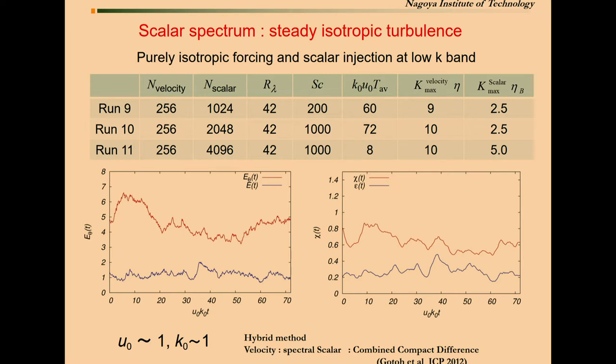However, because we consider high Schmidt number, we needed to keep the Reynolds number quite small or moderate, like 42.